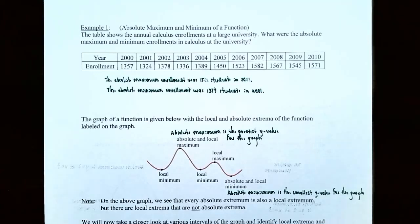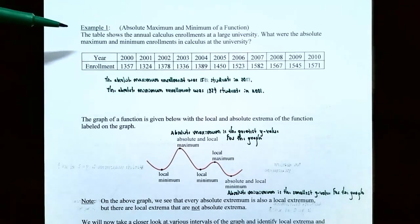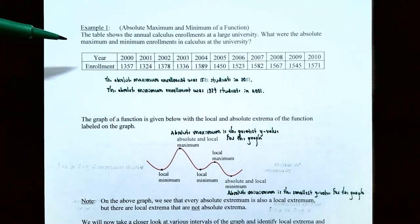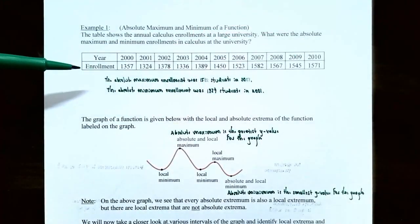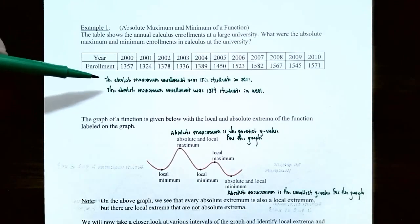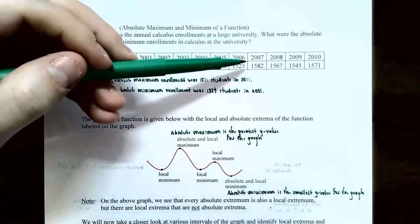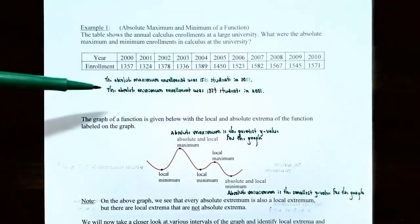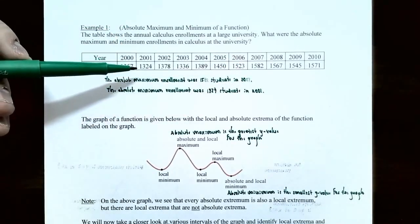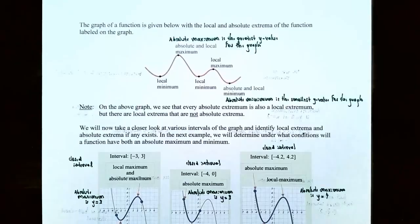Let's try an example of finding the absolute maximum and absolute minimum from a table of values. The table shows the annual calculus enrollments at a large university from 2000 to 2010. The absolute maximum enrollment occurred in 2007 with 1,582 students in calculus. The absolute minimum enrollment was 1,324 students and it occurred in 2001.